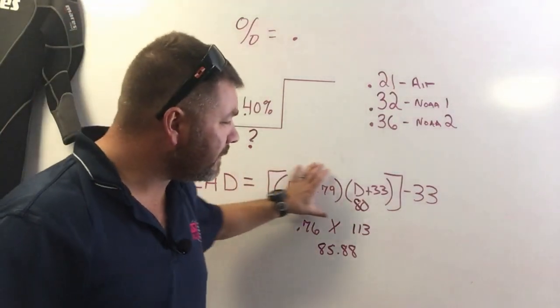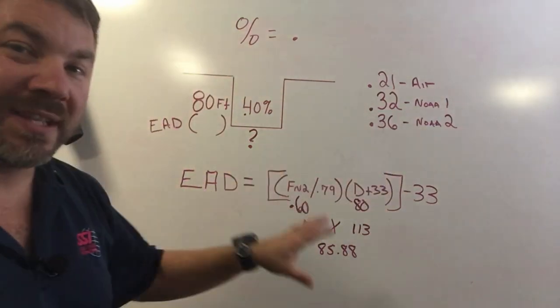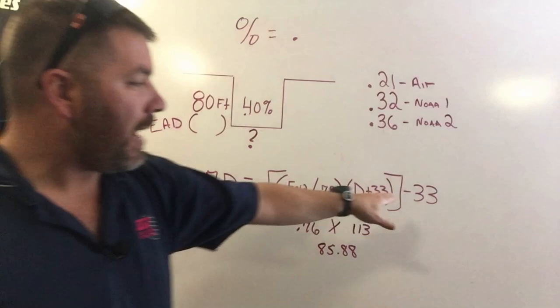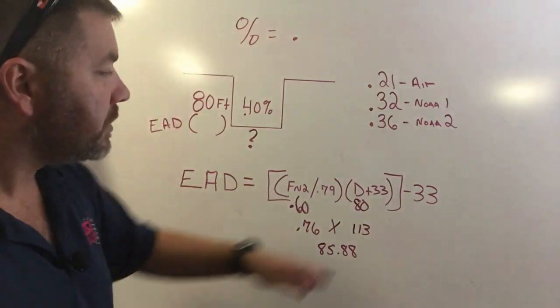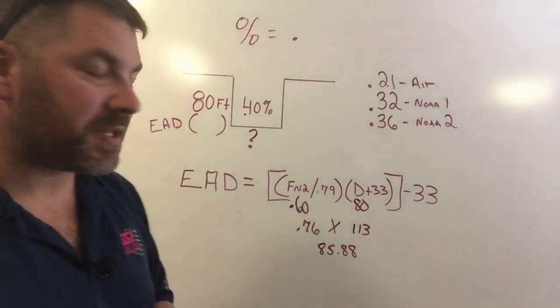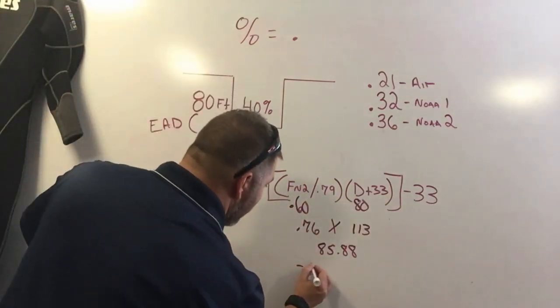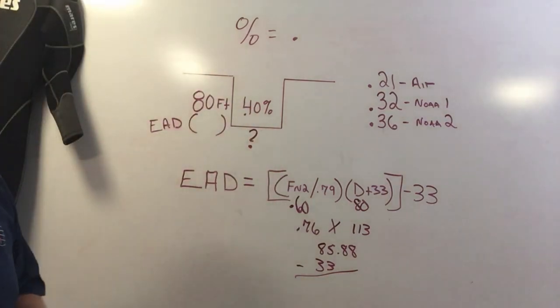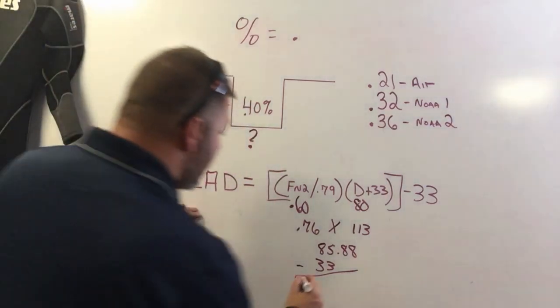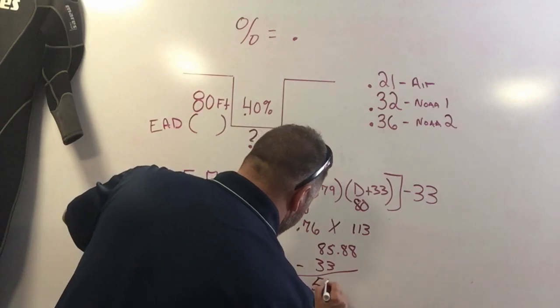Now I have effectively done everything within the bracketed area. Now I can come over here to this part of the equation and finish it out. Here it says I need to take away that atmosphere which happens to be 33, so I'll simply minus 33 here. I will go ahead and round up here, but if you follow along with calculator you should get the same answer, and it says my answer is 53 feet.